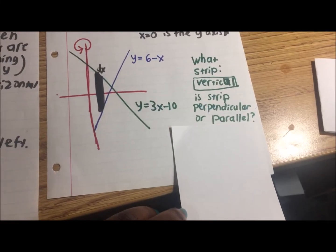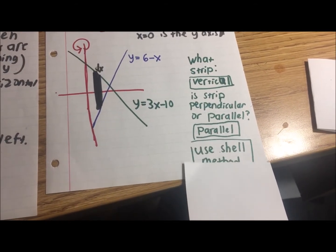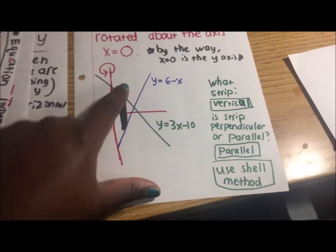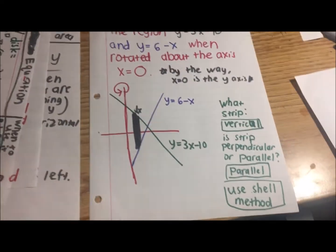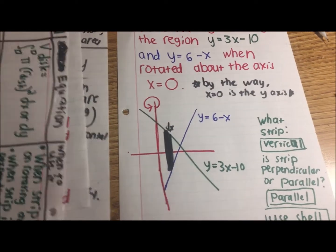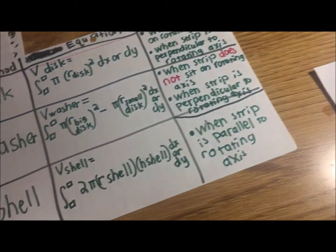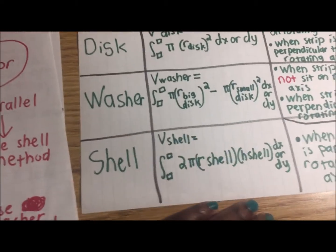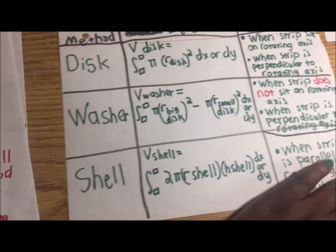Going back to our flowchart: since the strip is parallel to the rotating axis, we use the shell method.